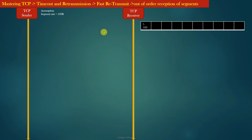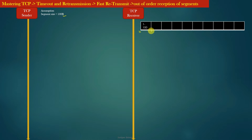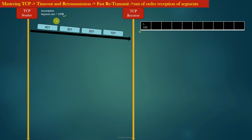Let us try to understand how a TCP receiver responds when it receives out-of-order data segments from the TCP sender. In this example, we assume that the size of data segments generated by the TCP sender is 100 bytes. At this point, the TCP receiver has already received 100 bytes of data with sequence numbers from 1 to 100, so the next sequence number it expects is 101 and onwards.